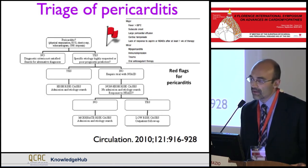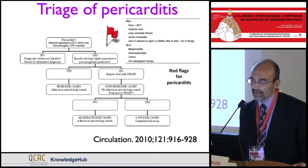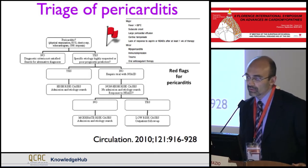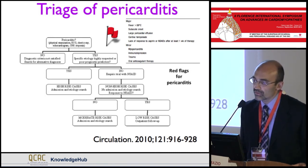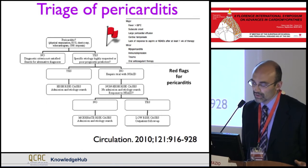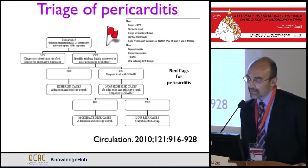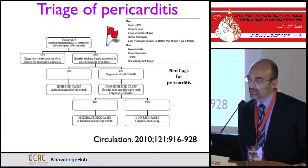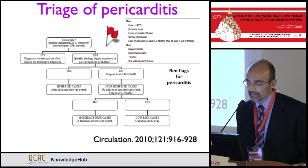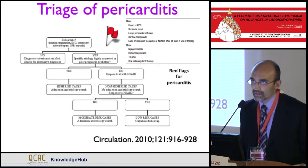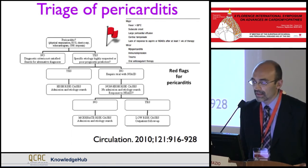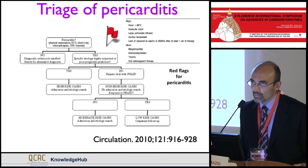We also consider the possible presence of concomitant myocarditis, immunodepression, trauma, and oral anticoagulant therapy, as these may predispose to complications. If no red flags are present, the patient is considered for outpatient therapy with an empiric trial of NSAIDs. If the patient responds well, outpatient follow-up is appropriate. Otherwise, if red flags are present or the patient does not respond to conventional therapy, reconsider the etiology search and consider admission. This is a practical and cost-effective approach for managing acute pericarditis and recurrences.